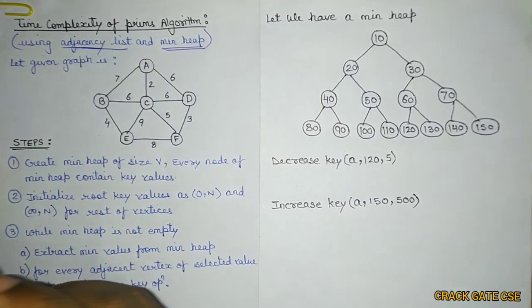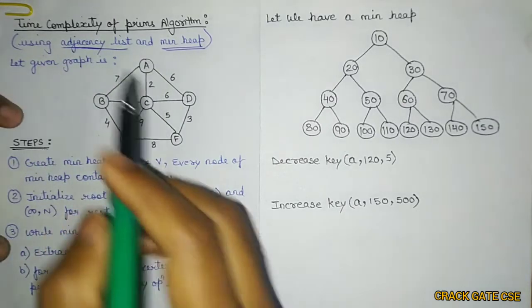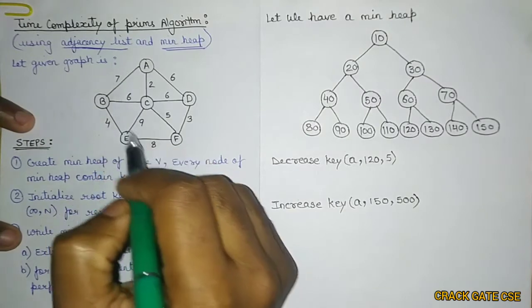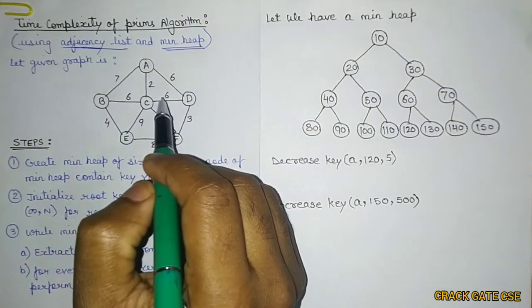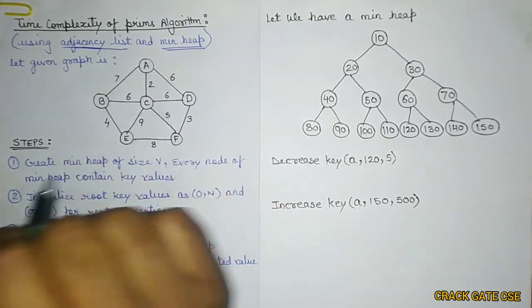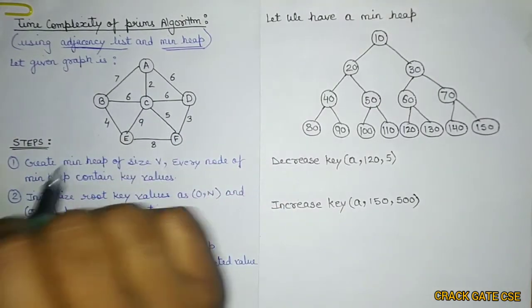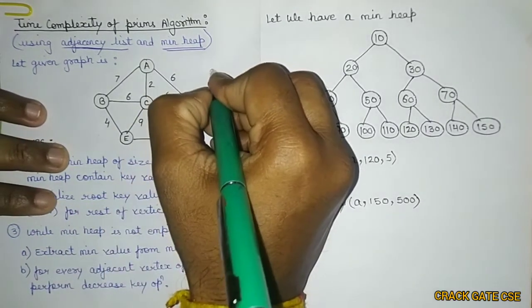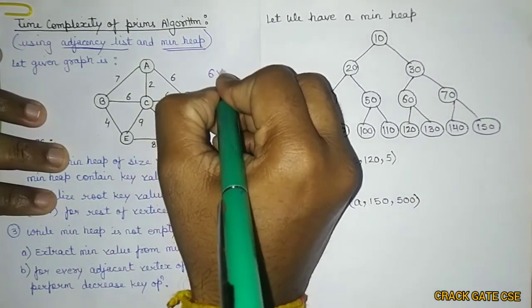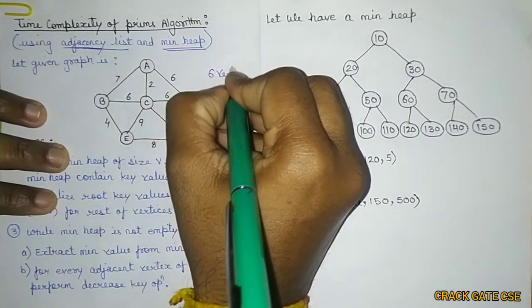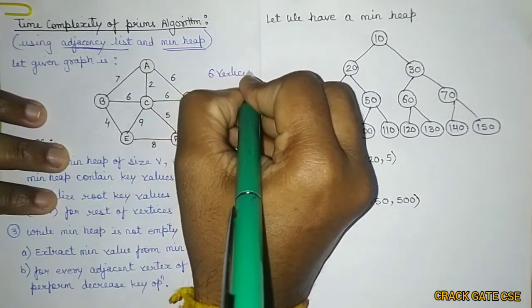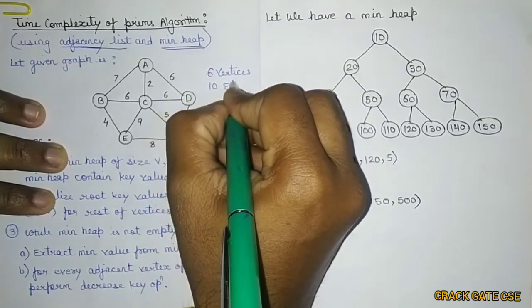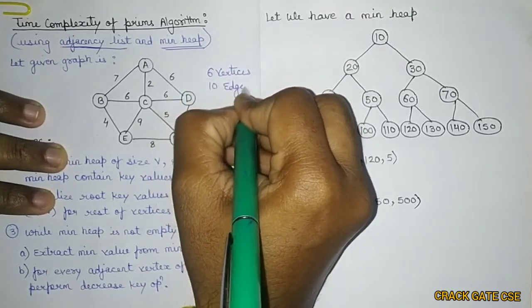Now let's start with the time complexity. I'm having this particular graph — a graph with six vertices and 10 edges.